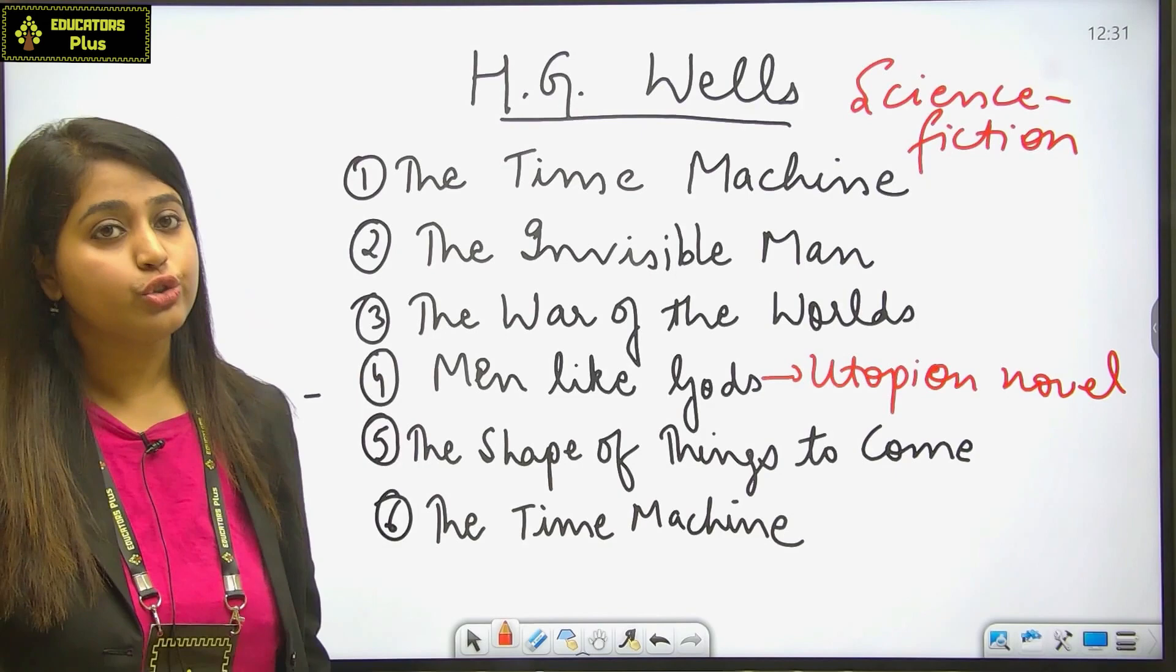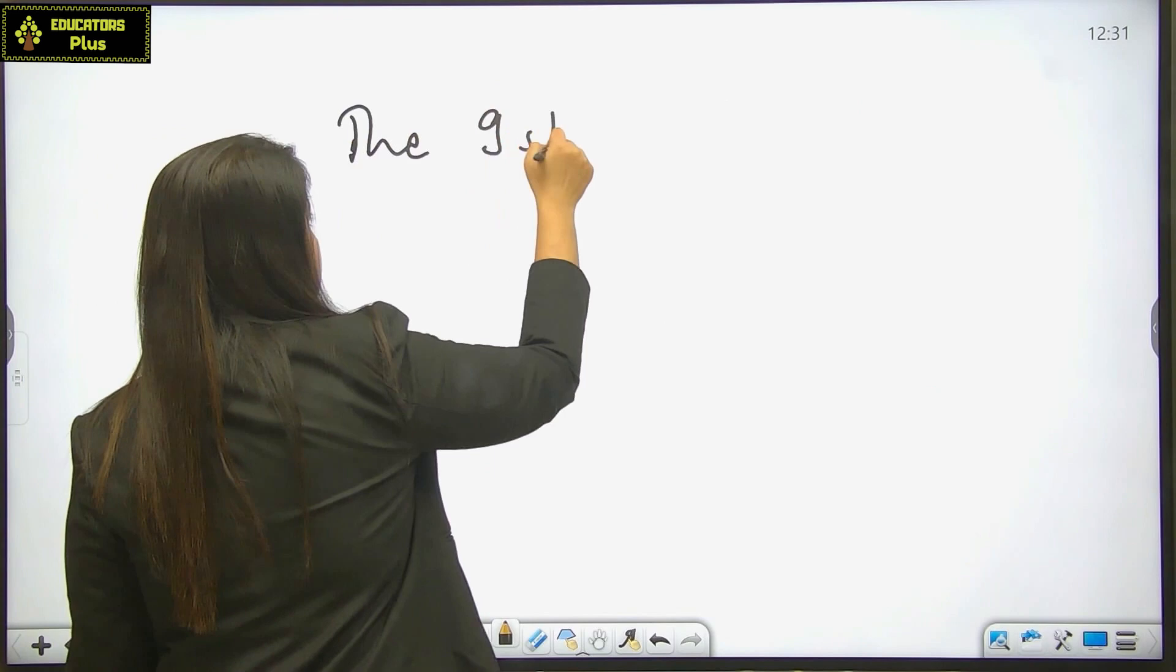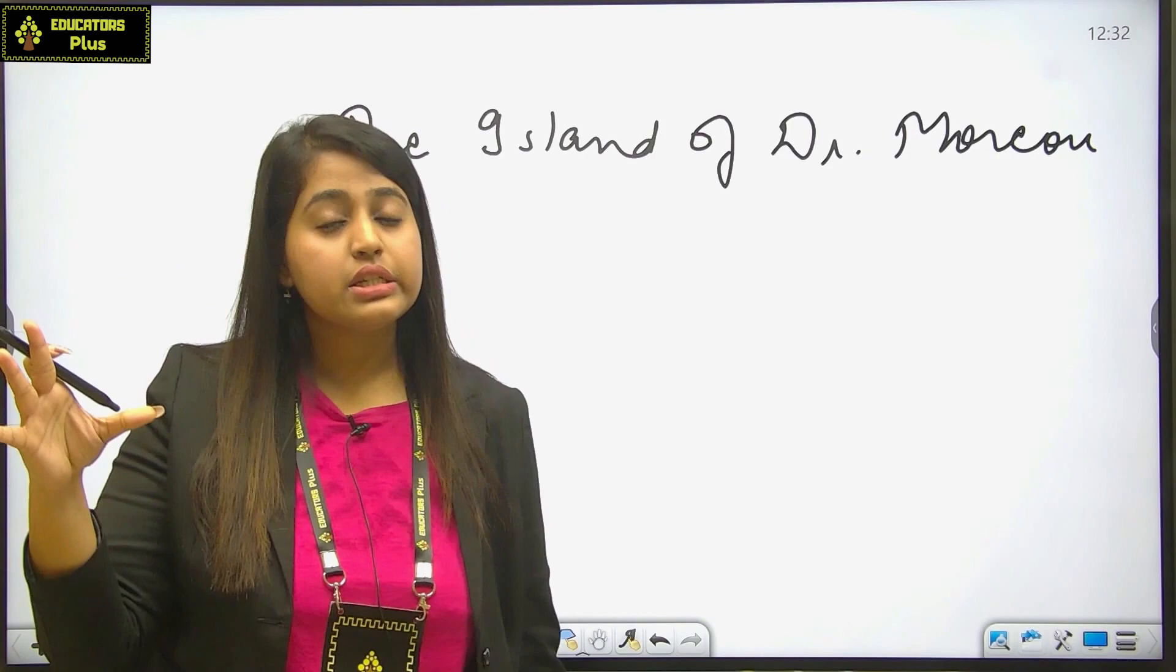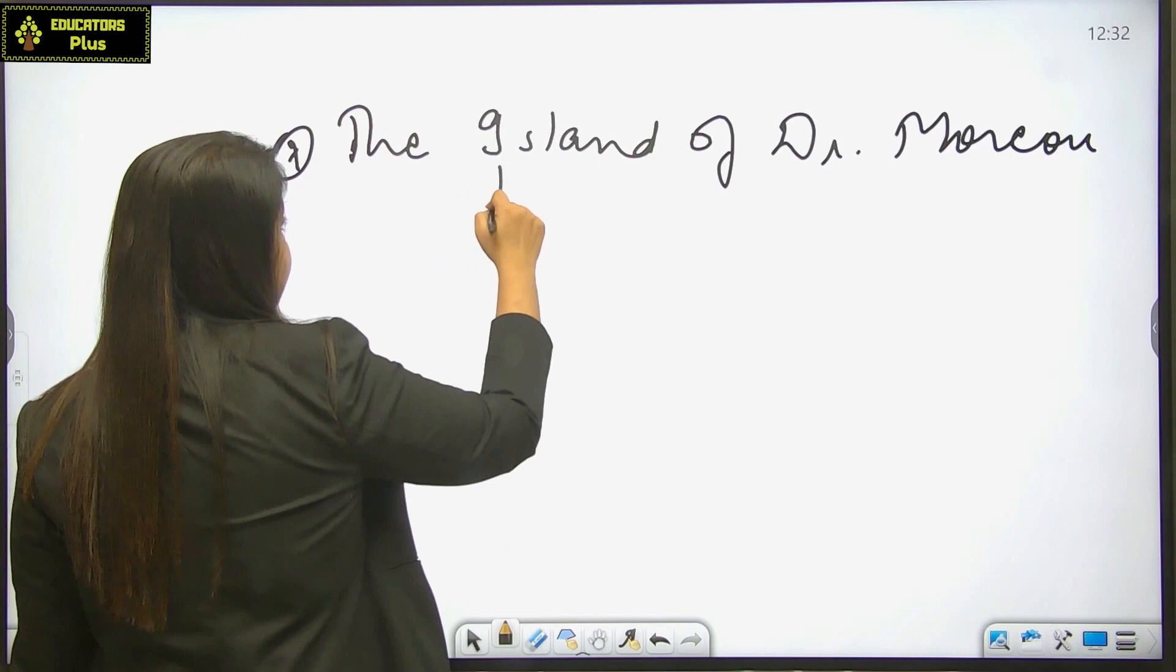One important work is The Island of Dr. Moreau. Please check the spelling. This important work is important because here the narrator is trapped in an island of animals. In The Island of Dr. Moreau, the narrator has been trapped in the land of animals.